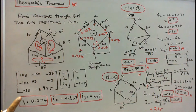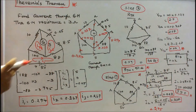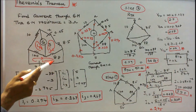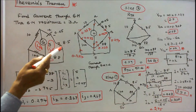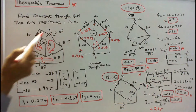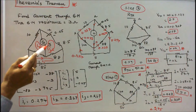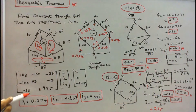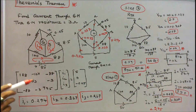Now we work out one problem using Thevenin's theorem. Find the current through the galvanometer whose resistance is 3 ohms. The circuit consists of 10 ohm, 100 ohm, 88 ohm, and 8.5 ohm resistances, a voltage source of 0.05 volts, and another voltage source of 5 volts. First, I solve the problem using Maxwell's mesh method. In the Maxwell's loop method, I form three loops with clockwise current directions I1, I2, and I3.